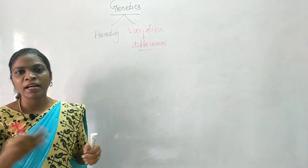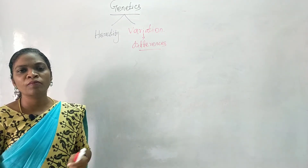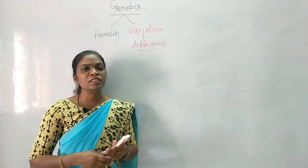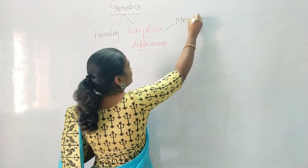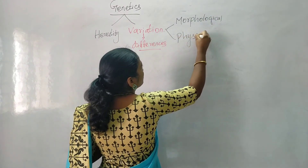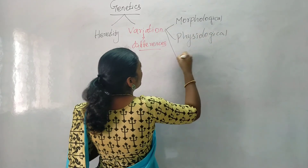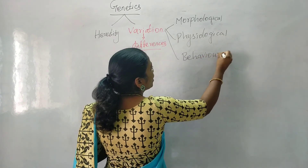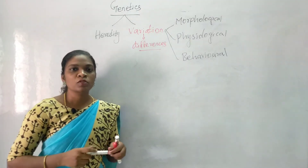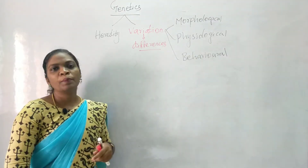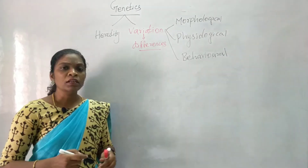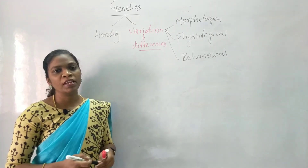Every organism, including human beings, shows variation — every individual is not exactly the same. You can find variation in skin color, height, and blood grouping. Variations may be morphological, physiological, or behavioral. Differences between organisms represent variation, except in the case of identical twins. Even dizygotic twins will show some variations. Variation is known as the raw material for evolution.